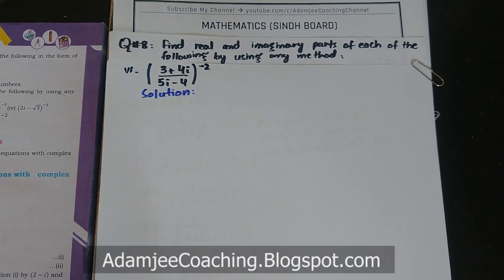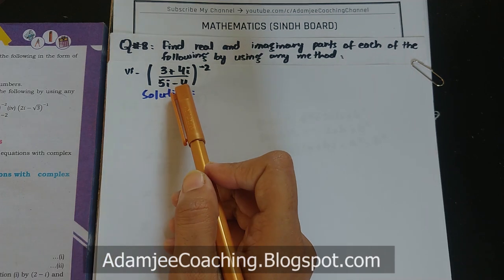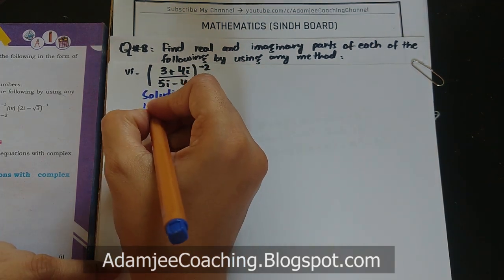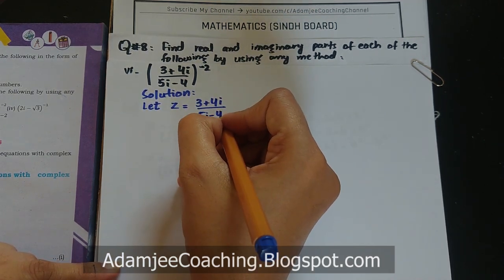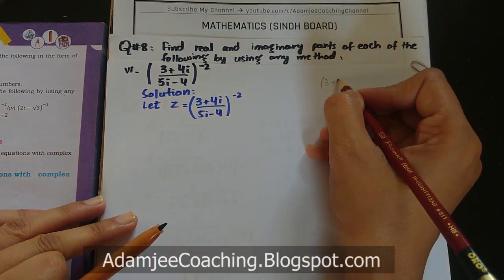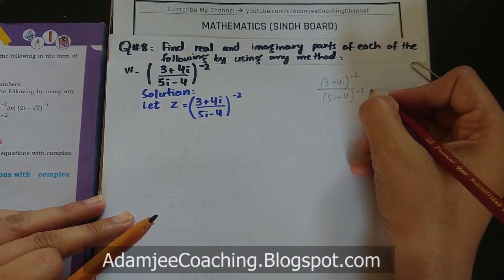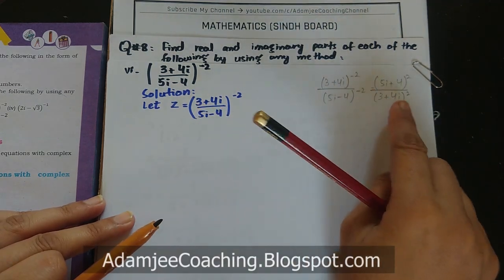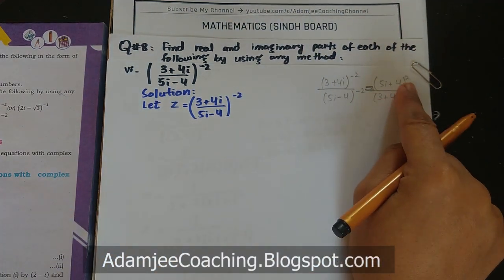Part 6: ((3+4iota)/(5iota-4))^(-2)۔ Numerator اور denominator دونوں میں complex number موجود ہے اور exponent negative ہے۔ z = ((3+4iota)/(5iota-4))^(-2)۔ Exponent negative ہے تو fraction پلٹ جائے گا: z = ((5iota-4)/(3+4iota))²۔ دونوں کو square کریں۔